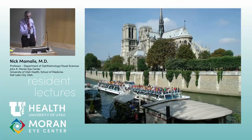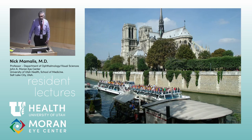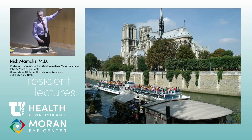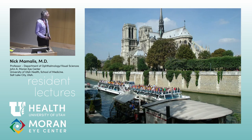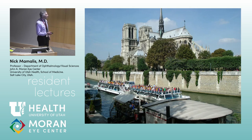I apologize — we're not going to have a pointer again, so I'll just have to point to things. This is a really depressing sight because this is what Notre Dame looked like before the massive fire almost took it out. You can see the spire that collapsed when the roof was on fire. The tour boats go on the Seine, and Notre Dame is actually on an island in the middle of the Seine. It was beautiful to see.